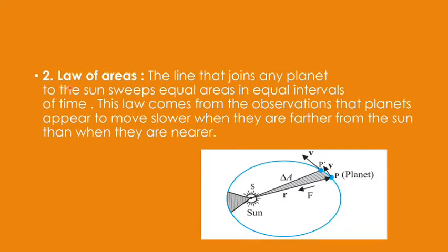The second law is the Law of Areas. If a line joins any planet to the sun, and the planet moves from P to P-dash in one location, and from Q to Q-dash in another location of its orbit, then if the time interval is the same, the area swept will be equal. Any planet moving around the sun covers equal areas in equal intervals of time — that is the Law of Areas.